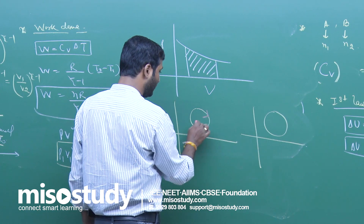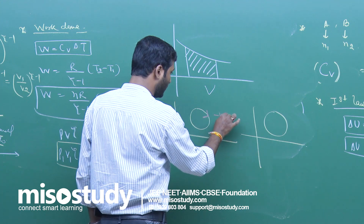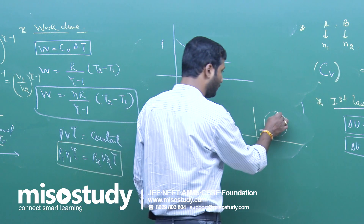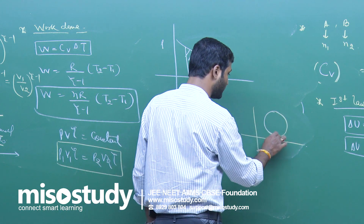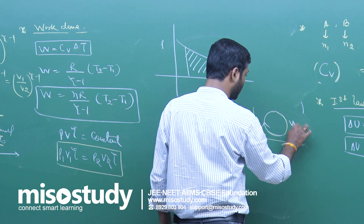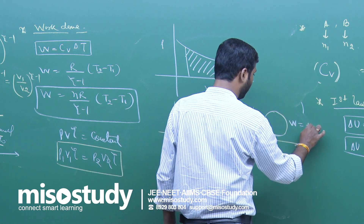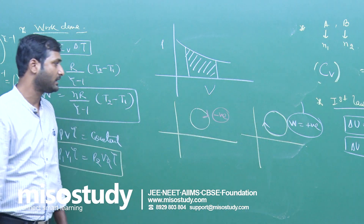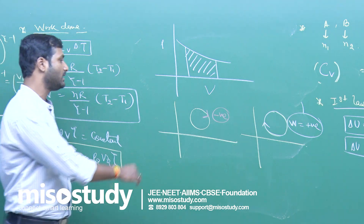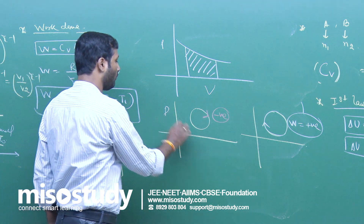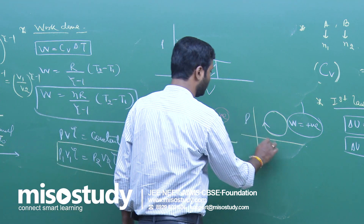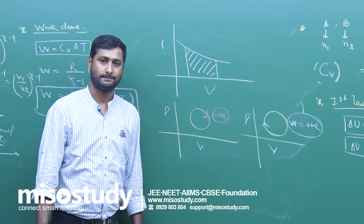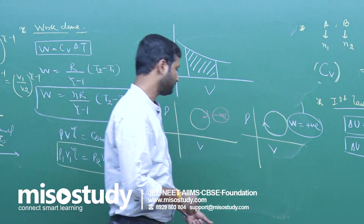In a cyclic process on a P-V graph: if the direction is clockwise, work done is negative; if anti-clockwise, work done is positive. Area under the curve gives you the work done.